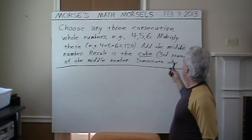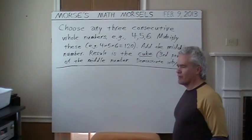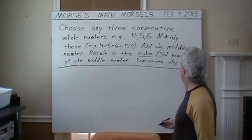Finally, add the middle number. The result is the cube, third power of the middle number. Demonstrate why.